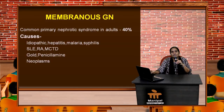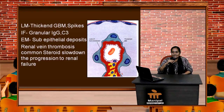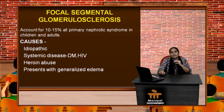Membranous glomerulonephritis is more common in adults. Patients present with anasarca or generalized edema, but there will also be hypertension, renal failure, and the urine will show non-selective nephrotic range proteinuria and hematuria. Light microscopy shows thickening of the glomerular basement membrane with spikes, sometimes called dense deposits. Immunofluorescence reveals granular immunoglobulin deposition and C3. Electron microscopy shows sub-epithelial deposits. A common complication is renal vein thrombosis, and steroids slow disease progression to renal failure.